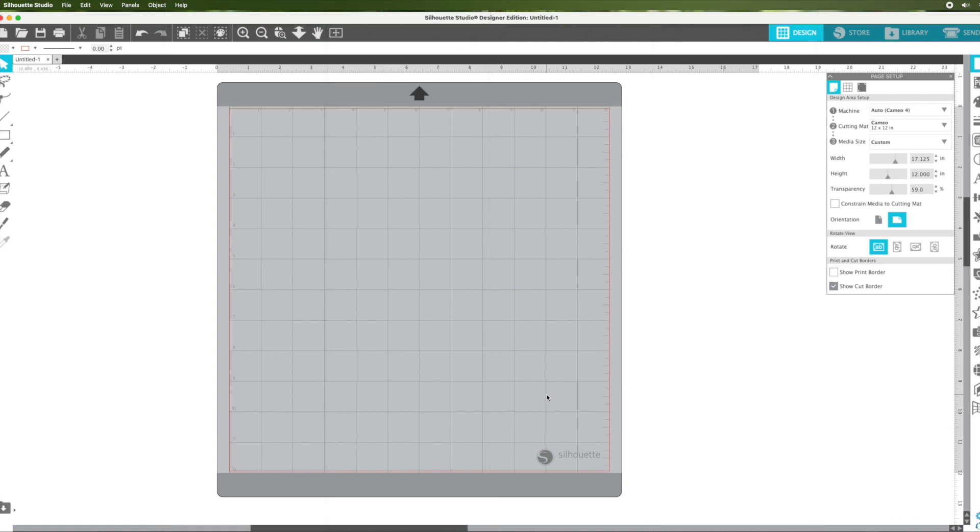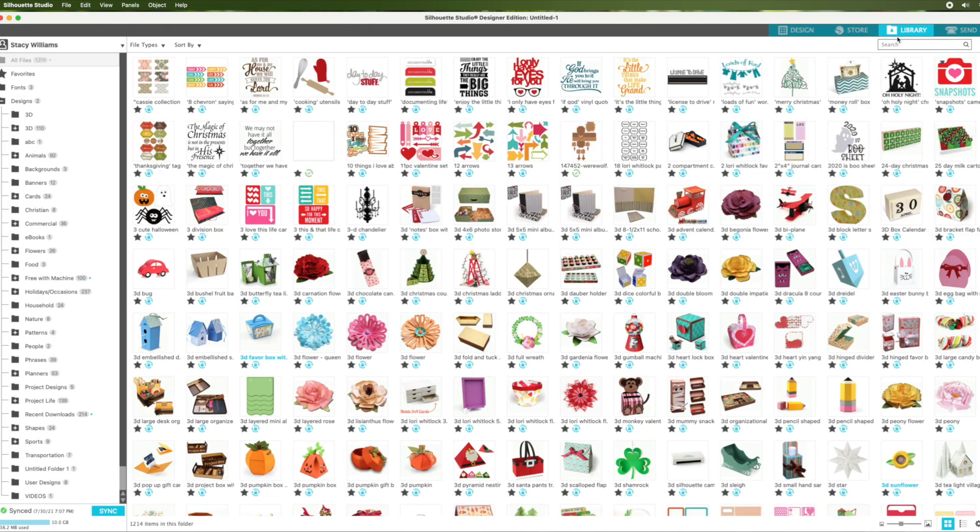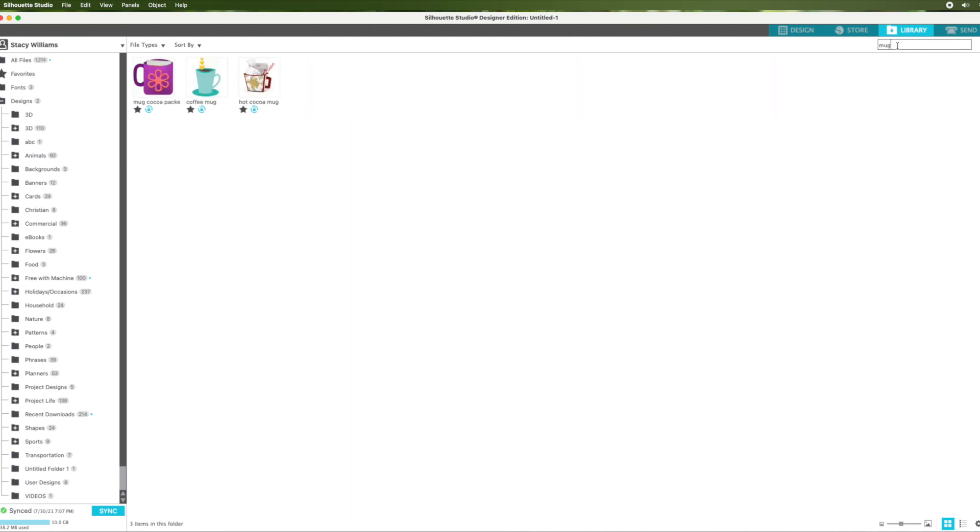Here we are inside the Silhouette Studio software and I first want to go to my library to find the design. In the upper right hand corner I'm going to click where it says library. This will bring up all of my images. In the search box I'm going to type in the word mug and then click enter.